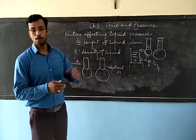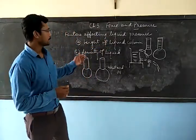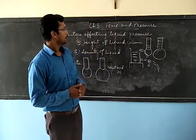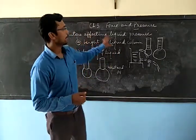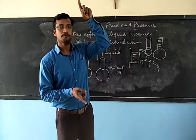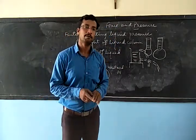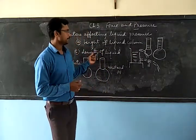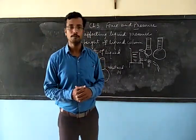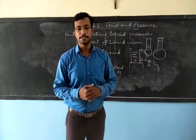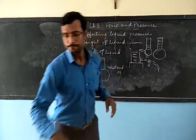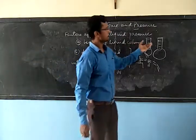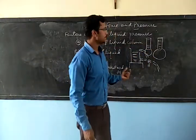The first factor is the height of the liquid column, and the second is the density of the liquid. When we increase the height of the liquid column, the pressure exerted by the liquid will also increase. Similarly, if the density of the liquid is more, it can exert more pressure. You can see I have taken three different figures here.